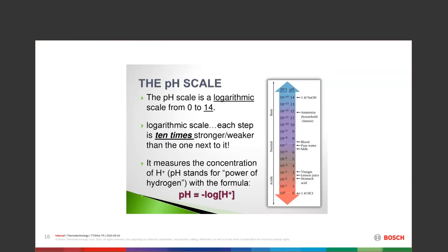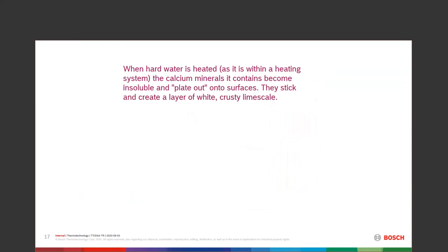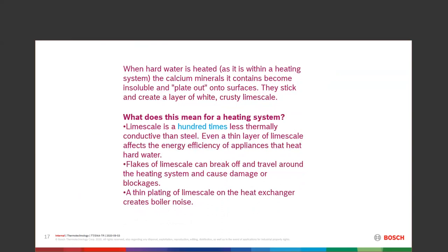Hard water contains calcium and magnesium. When heated — usually around 130–140°F — those minerals come out of suspension and turn into solids that stick to the hottest surfaces inside the boiler, forming a white crusty layer of limescale. That scale is a hundred times less thermally conductive than steel, so even a very thin layer starts messing with efficiency — how well can we transfer the heat from the fire side through the metal and into the water?